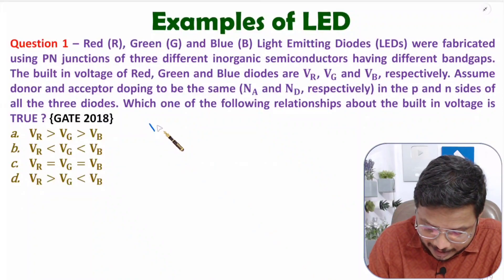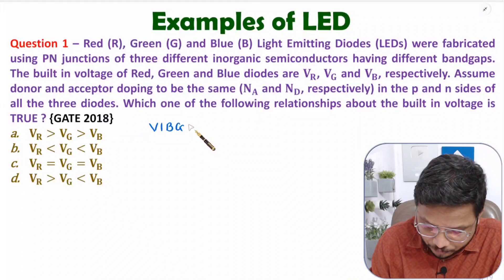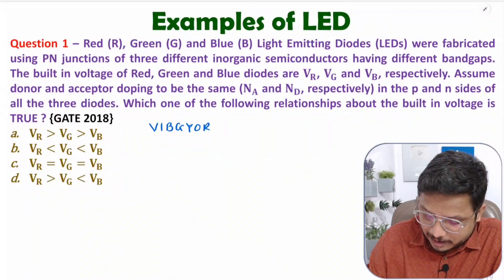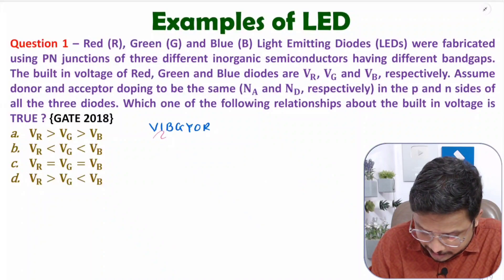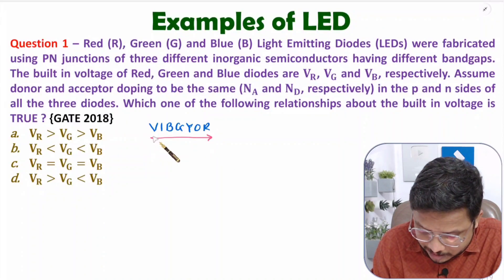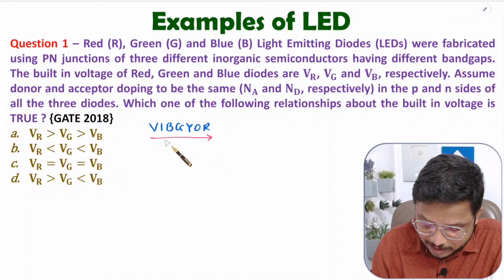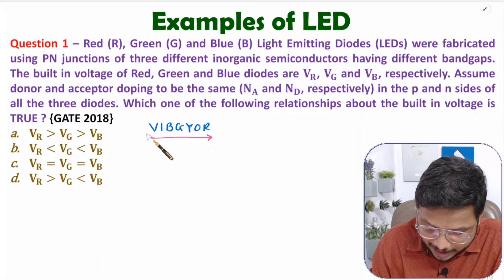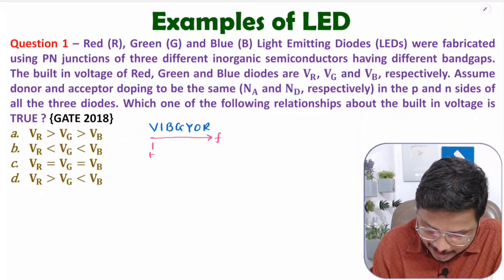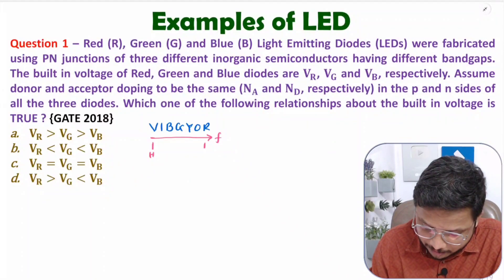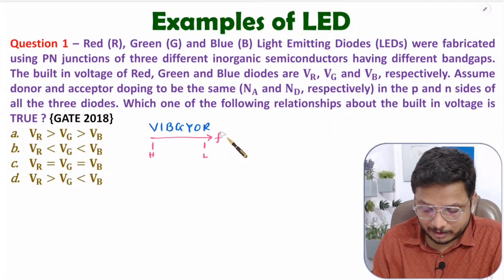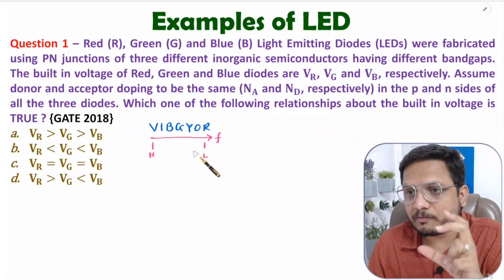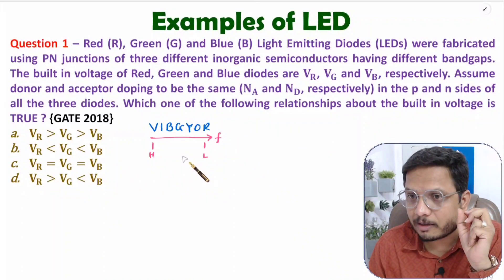We need to understand things in terms of color. As per the rainbow color sequence: violet, indigo, blue, green, yellow, orange, red — violet has the highest frequency, and as you move toward red, frequency decreases. The lowest frequency is with red. I'm talking about frequency because based on frequency you can understand the energy band gap.